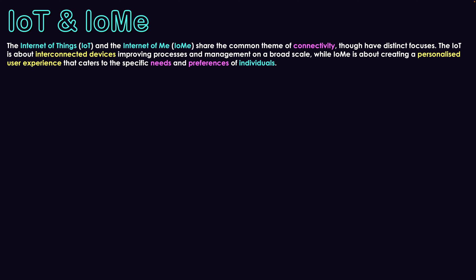The IoT is about interconnected devices improving processes and management at a broad scale, while the IoMe is about creating a personalized user experience that caters to specific needs and preferences of individuals. Essentially, the IoT is what brings it all together and is the technology that makes it all work, and the IoMe is about that personal user experience. We're going to explore these two concepts to distinguish between the two.